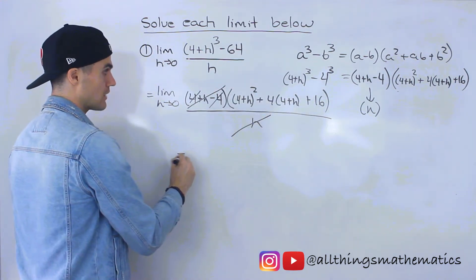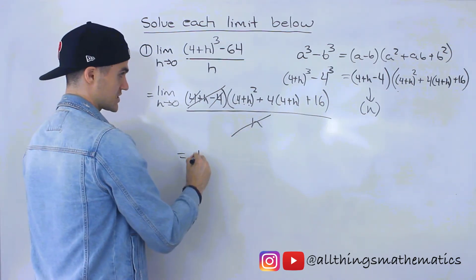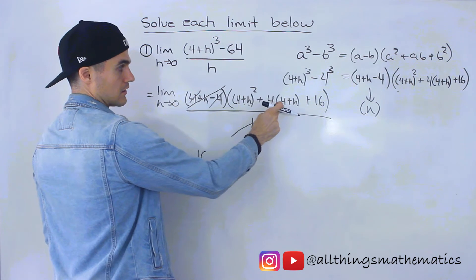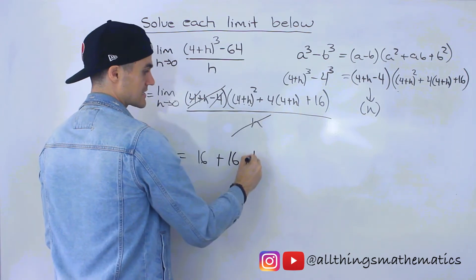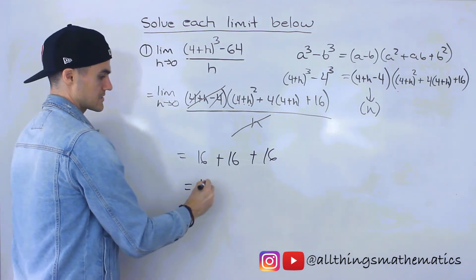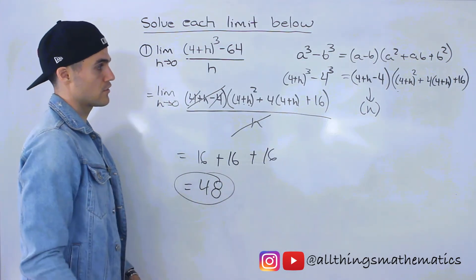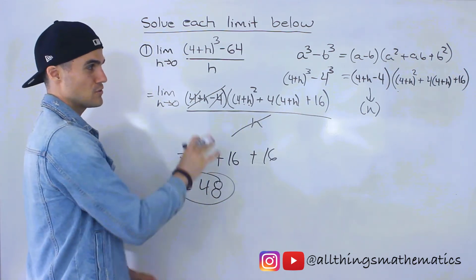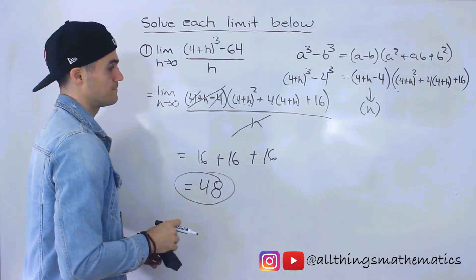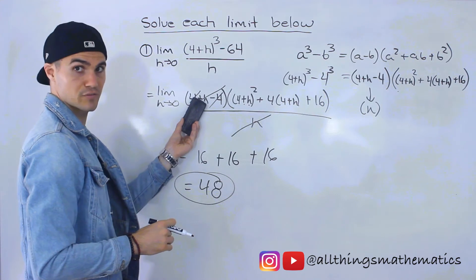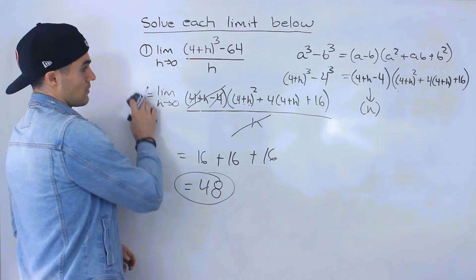Now we don't have to simplify the second bracket — just plug in zero for h. We'll have (4 plus 0) squared, which is 16; plus 4 times (4 plus 0), which is 16; plus 16 at the end. That gives us 48, which is the exact same answer as the first method. Remember, you don't have to simplify the second bracket — just get rid of the h in the denominator by simplifying the first bracket. That was the second method, and again, it's my preferred method.